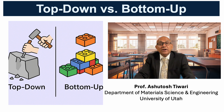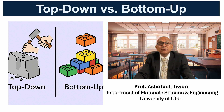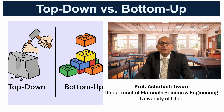In contrast, the bottom-up approach assembles atoms and molecules into larger structures through processes such as sol-gel synthesis, chemical vapor deposition, electroplating, and self-assembly. Both approaches complement each other. Top-down ensures precision and pattern fidelity, while bottom-up offers atomic control and scalability from the smallest building blocks.